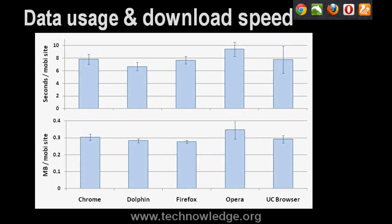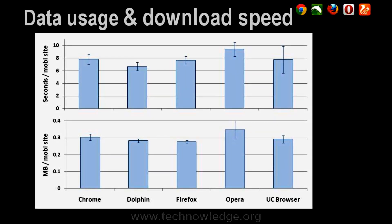Now looking at data usage and download speed — before the details, a quick rundown of how I ran these tests. All tests were done with mobile sites. Each result represents the data usage or download time for four standardised mobile websites under standard conditions. Tests for all browsers were done in the exact same conditions and with the same methods. Data was measured with uncached websites — the cache was cleared between each test, except for the caching tests shown later. For the data compression test, image resolution was set to the lowest for each browser that has this feature, and error bars indicate the standard deviation from the mean.